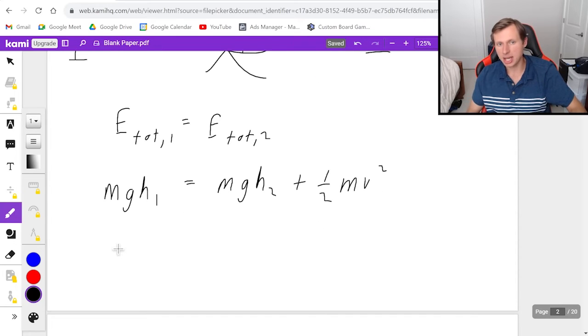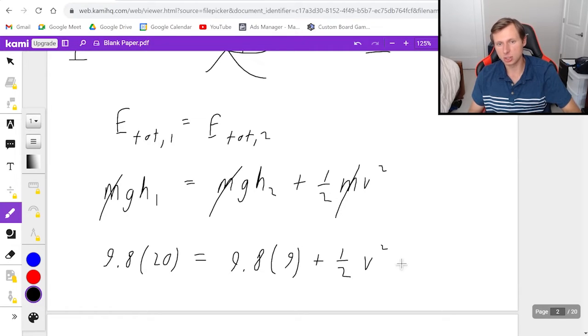So now when I plug in my formula for E total 1 equals E total 2, I'm going to say at point 1, it's MGH1. And then at point 2, I'm going to say MGH2 plus 1 half MV squared. So then for the first one, the mass, I don't know, but actually mass cancels out because it shows up in all three terms. That's nice. G does not cancel out even though it shows up here and here. It does not show up here. So G does not cancel out.